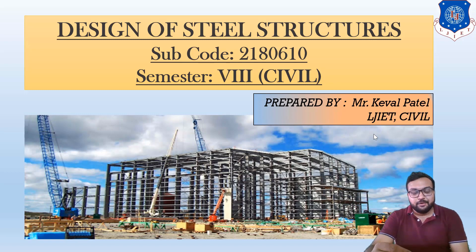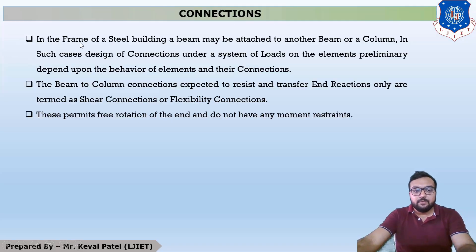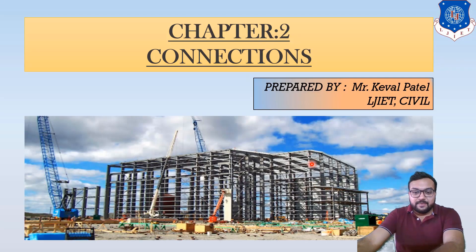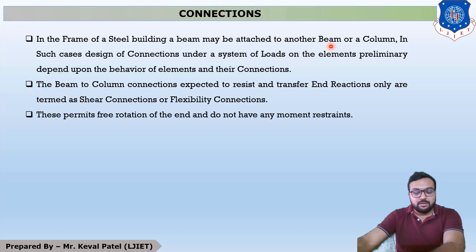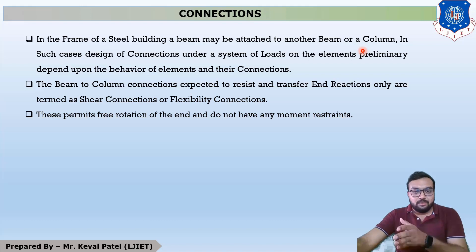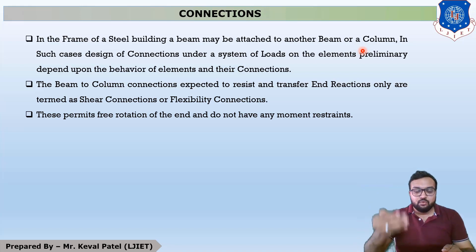Let us start the introduction of connections. In the frame of a steel building, a beam may be attached to another beam or a column, as shown in the figure. When the beam is connected to the column, the load transfers from secondary beam to main beam, and from main beam to column.